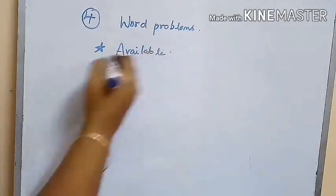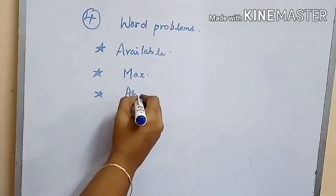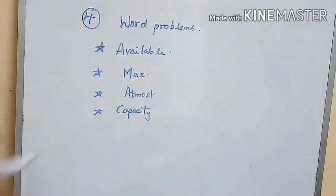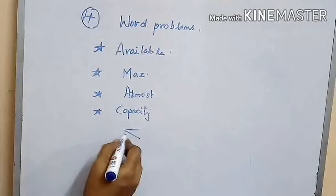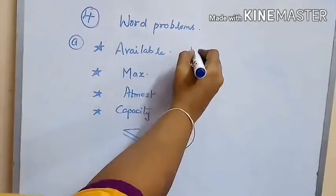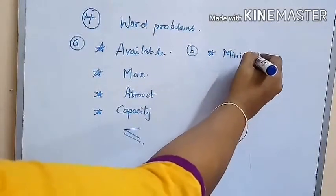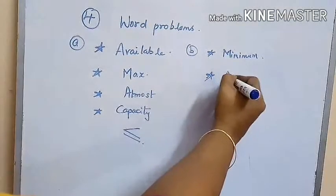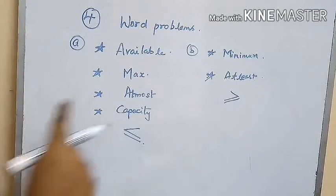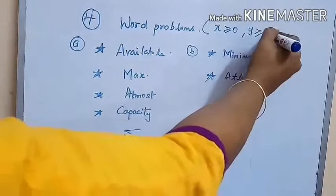The next topic is all types of word problems. If the keywords maximum, at most, or capacity appear, then the inequality to be used is less than or equal to. If the keywords minimum or at least appear, then the inequality is greater than or equal to. For both types, the common condition will be X greater than or equal to zero and Y greater than or equal to zero.